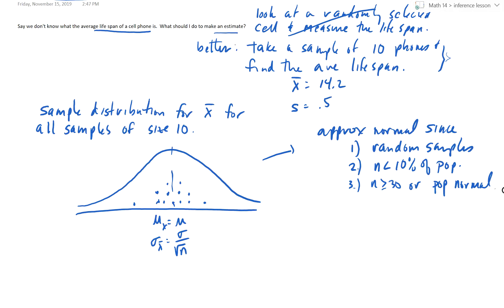Here's where this changes — this is different from proportions. I don't know what sigma is, and I never will. And I don't know what mu is — I'm trying to make an estimate for that. So I'm going to use S, the standard deviation of my sample, instead of sigma. S is for my sample, so I'm going to use that. I'll get 0.5 divided by the square root of 10, which gives 0.158.